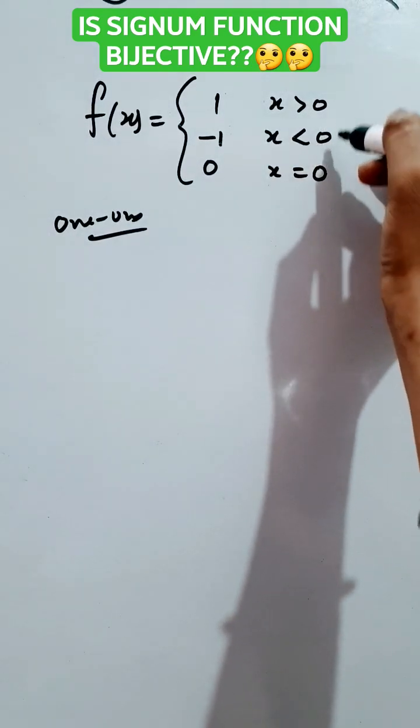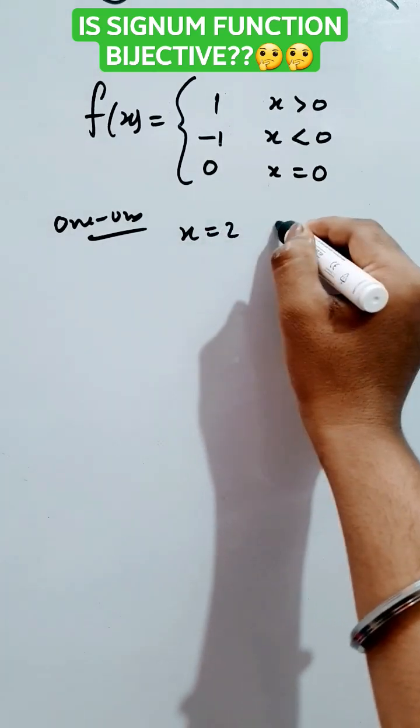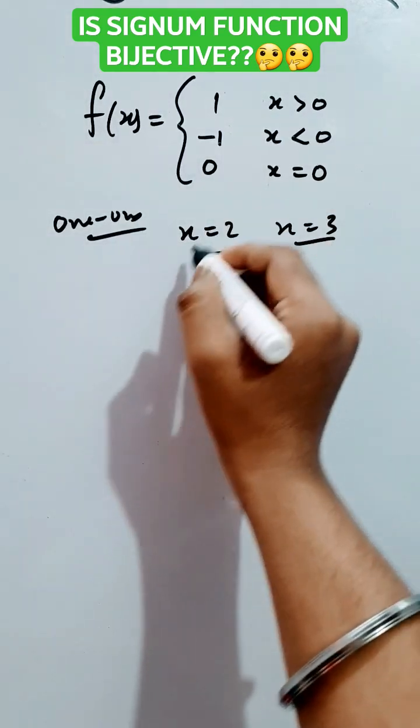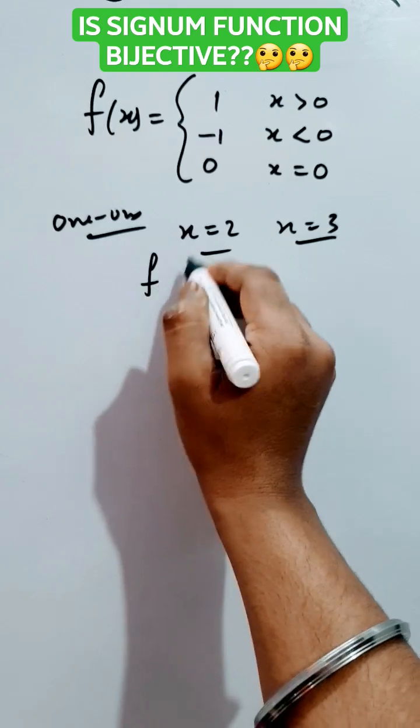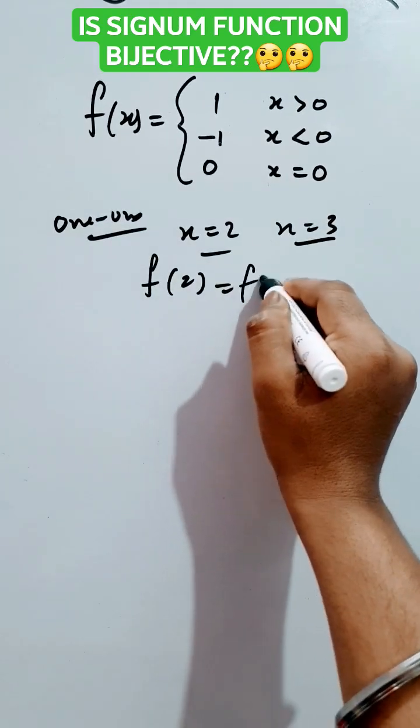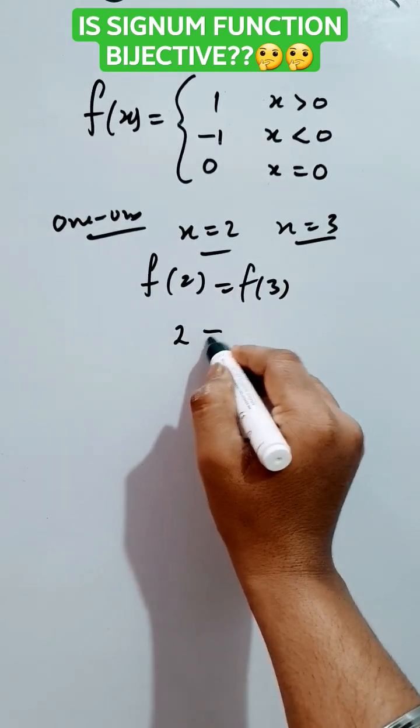Let's check any one of the examples. Let's check x equals to 2 and x equals to 3. In case of x greater than 0, if x is equals to 1, so f of 2 is equals to f of 3. Both are 1, but still 2 is not equals to 3.